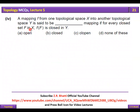A mapping f from one topological space X into another topological space Y is said to be a closed mapping if for every closed set F in X, f of F is closed in Y. Yani agar X ka koi close set liya jaye to uska image Y mein bhi closed hoga — yahi closed mapping kehlata hai.